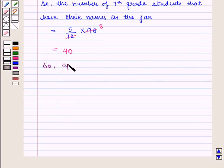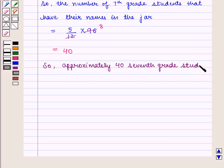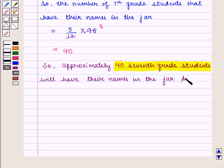So we can say approximately 40 seventh grade students will have their names in the jar, which is the required answer.